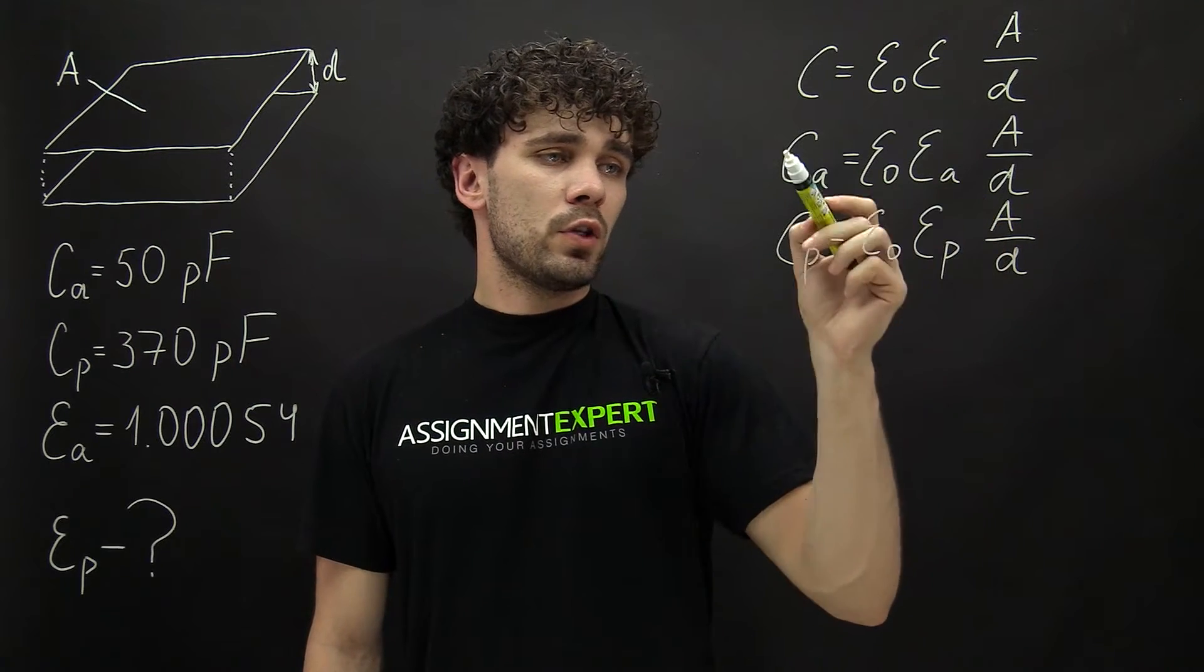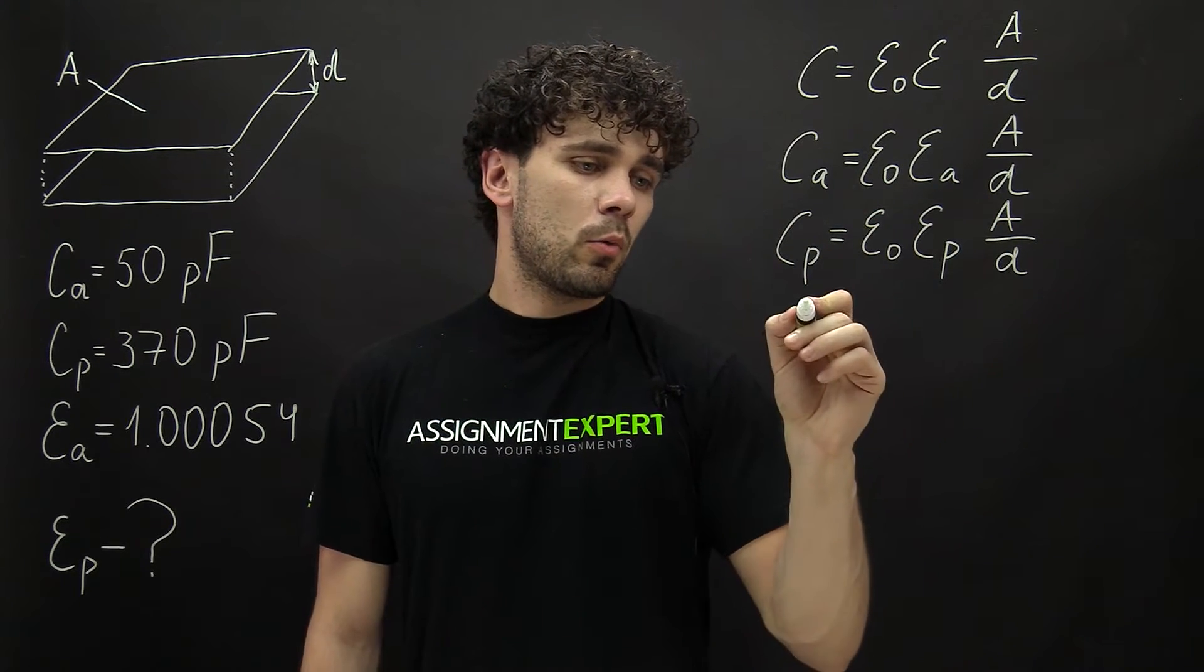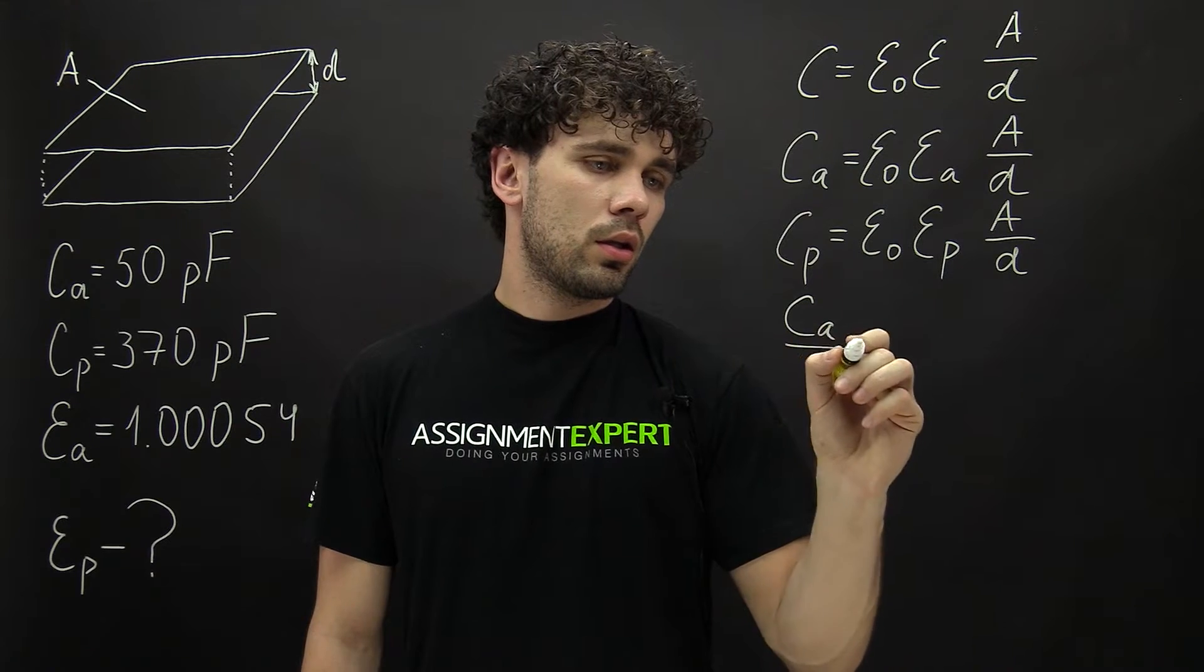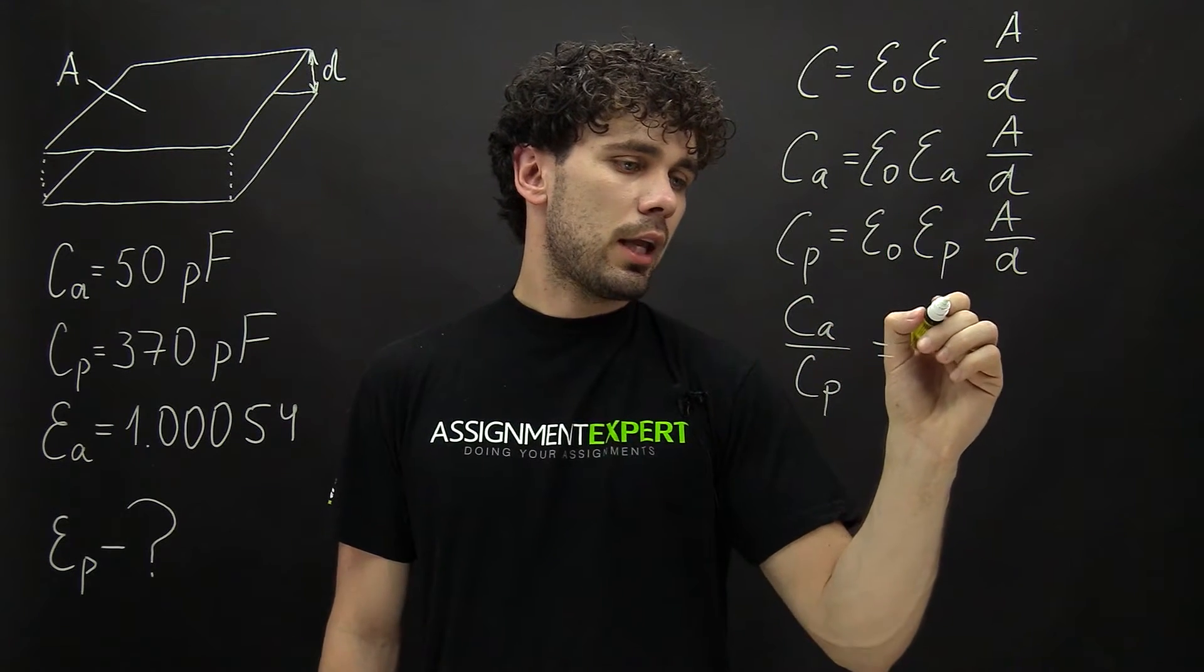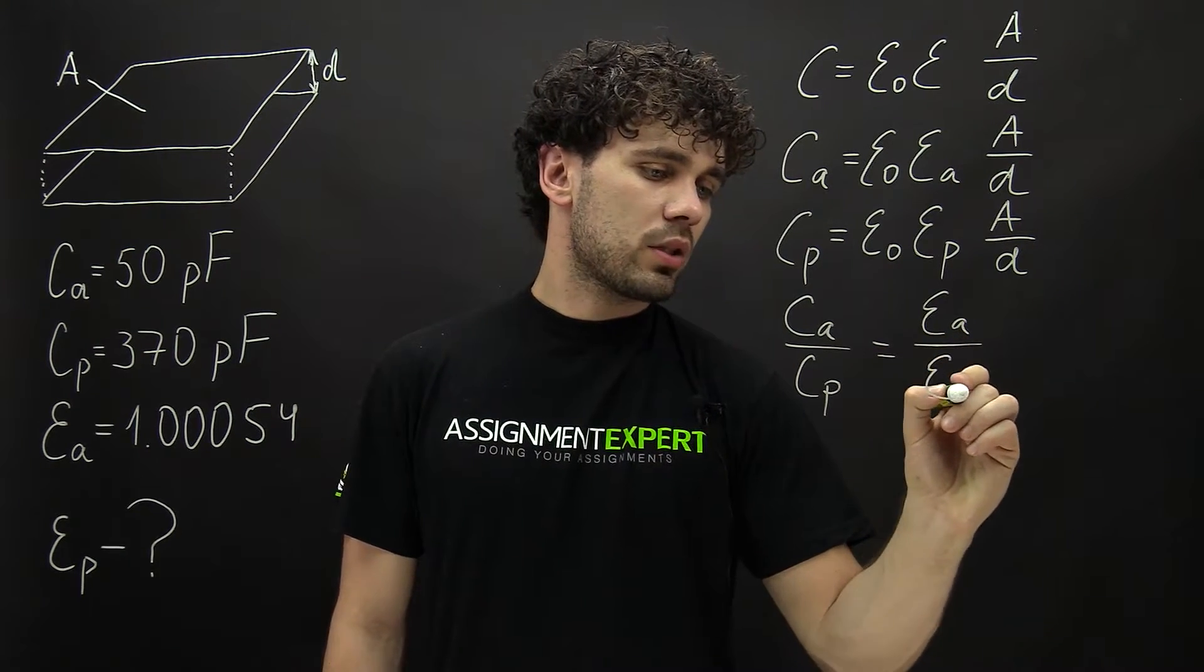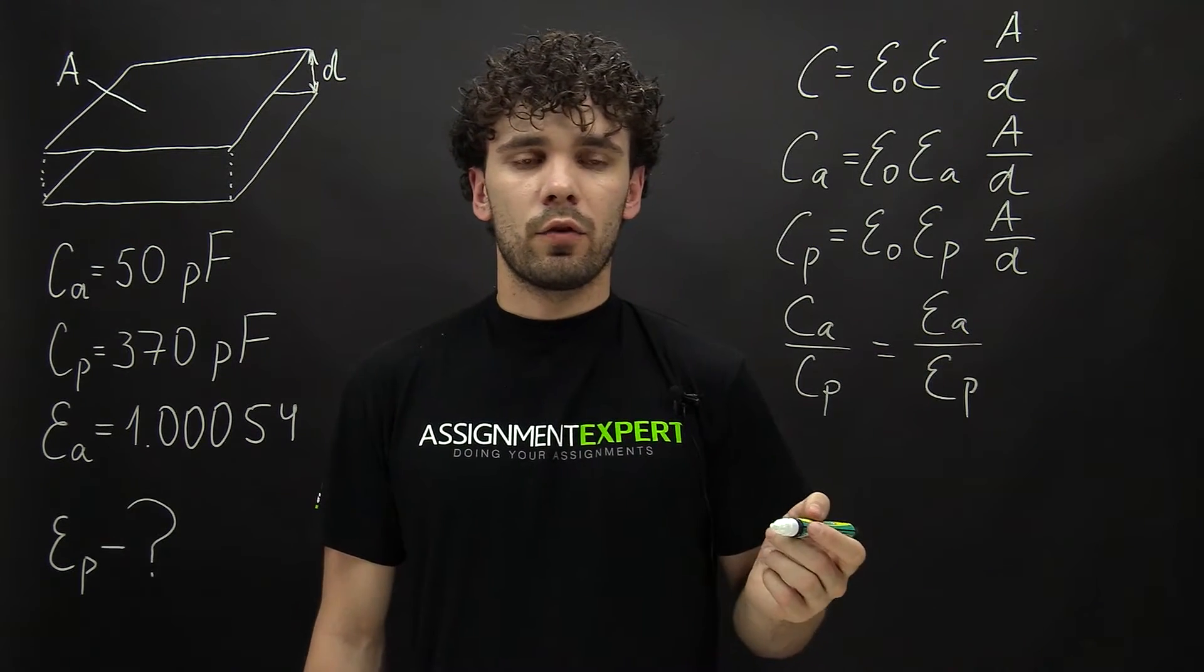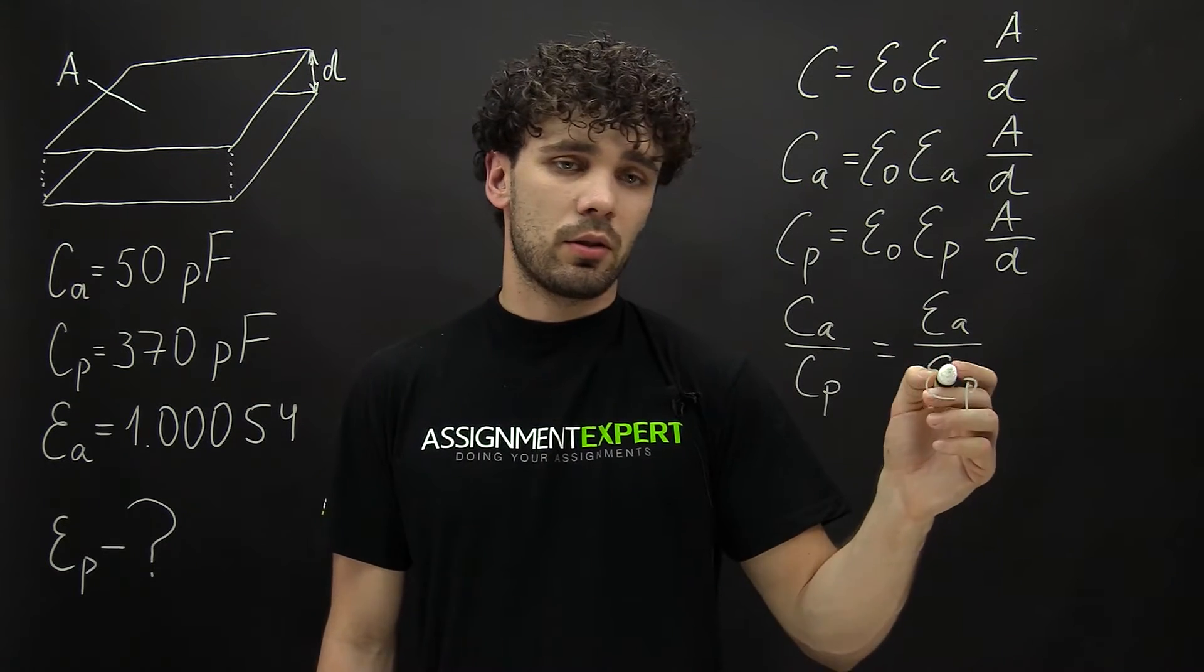Now let's divide the first formula by the second. We get C_A over C_P equals ε_A over ε_P. And from here, let's derive ε_P.